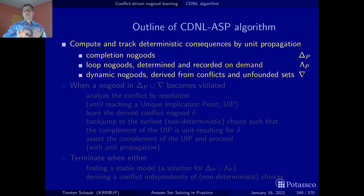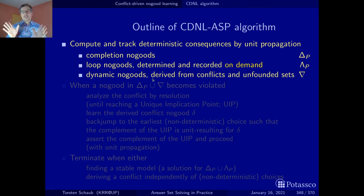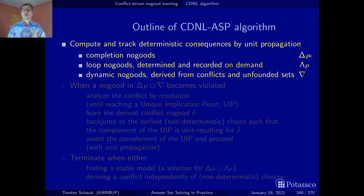The way the algorithm works — and this is detailed in the propagation later on — is that the loop no-goods are only recorded on demand, and actually whenever an unfounded set is encountered. So these dynamic no-goods contain, in the basic case, two types of no-goods: the conflict no-goods and the loop no-goods stemming from unfounded sets. As a result, the algorithm does not carry around these loop no-goods, but only the dynamic no-goods and of course the completion no-goods.